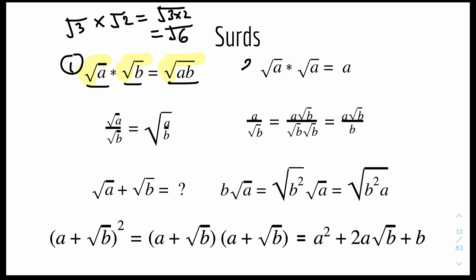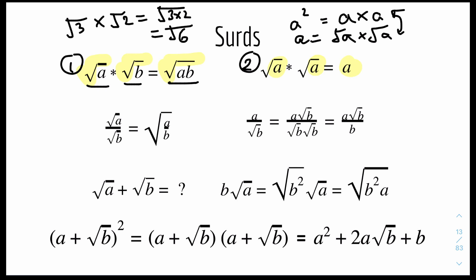For rule number 2, we have root A times root A equals A. Notice that all of these have the same constant — it's important that they are the same number in order to become just A. We know that A squared equals A times A, so if you square root both sides it becomes A equals root A times root A. So surd A times surd A equals A. For example, surd 3 times surd 3 equals 3, just like 3 times 3 equals 9.